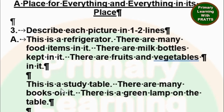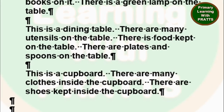For the study table: This is a study table. There are many books on it. There is a green lamp on the table.